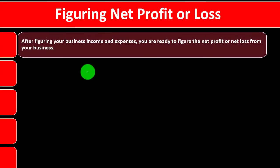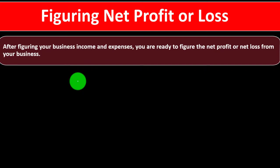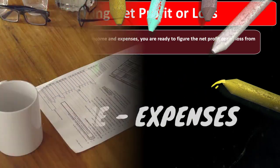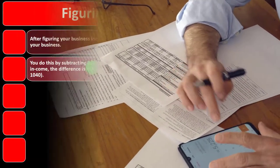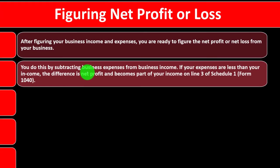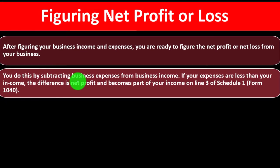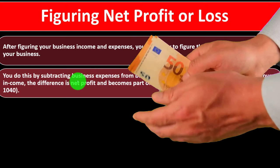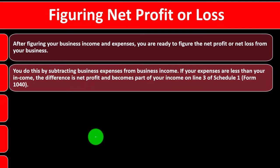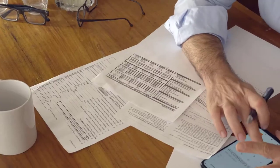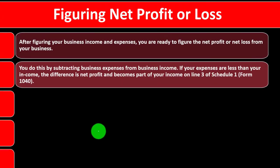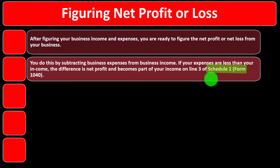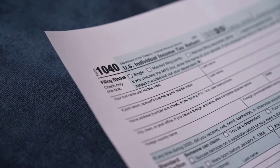After figuring your business income and expenses, you are ready to figure the net profit or loss — in essence, the bottom line of the income statement: income minus expenses. If income is greater than expenses or deductions, typically reported on Schedule C, you have a net profit. That difference becomes part of your income on Line 3 of Schedule 1, Form 1040, which then rolls into Page 1 of Form 1040.